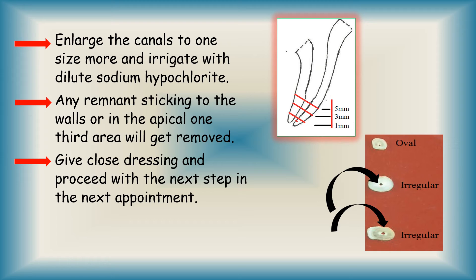Now if you observe the pictures, this is a picture of a prepared canal. Sections were taken at 1 mm, 3 mm and 5 mm from the apical foramen and observed under the microscope. It was seen that at 1 mm the canal preparation is oval, however at 3 mm and 5 mm the canal preparation is irregular. This irregular canal preparation allows pulpal remnants to be lodged there, which can then cause pain. Therefore, it is important during biomechanical preparation that we produce a smooth and tapered canal.